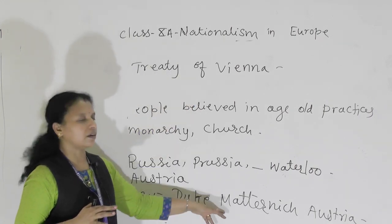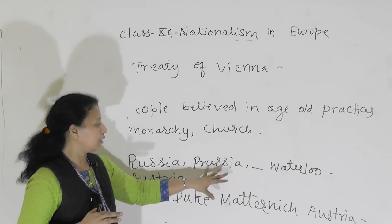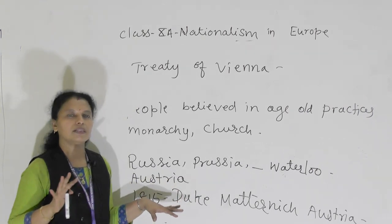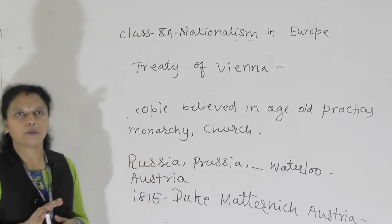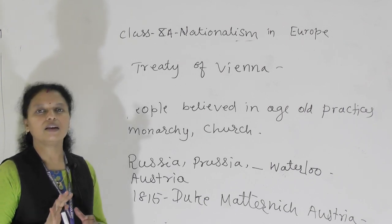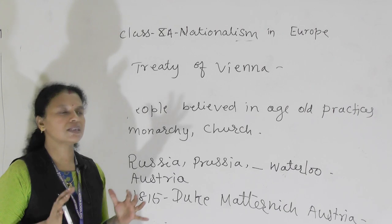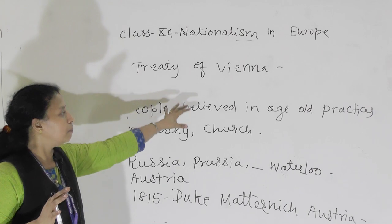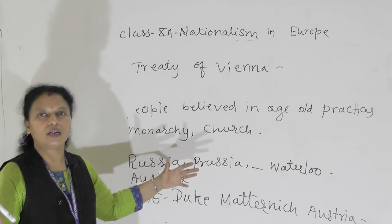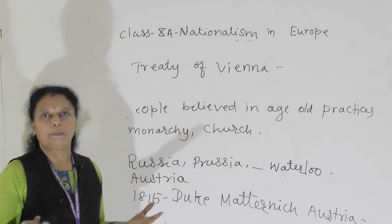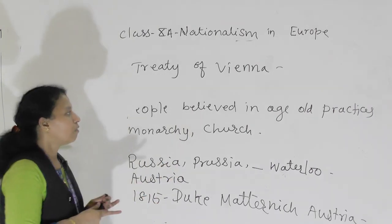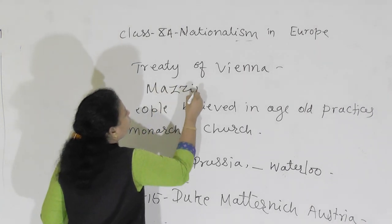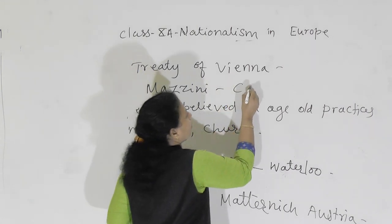The Treaty of Vienna was hosted by Duke Metternich of Austria. Many revolutionaries came up after this. During this time, the Bourbon dynasty started ruling in France, and many revolutionaries sprung up. One of the important revolutionaries was known as Giuseppe Mazzini. He was a very determined revolutionary and was a member of Carbonari, which was a secret underground institution.